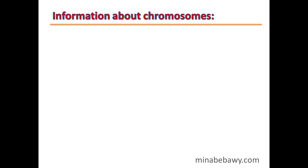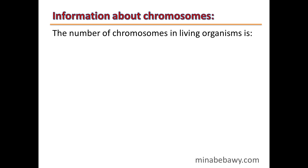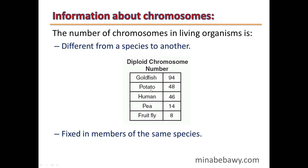The number of chromosomes in living organisms differs from one species to another. For example, potato contains 48 chromosomes, humans contain 46 chromosomes, and some plants contain only 14 chromosomes. As you can see, the number of chromosomes is different from one species to another.